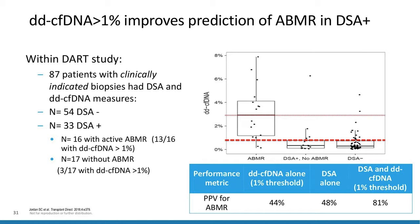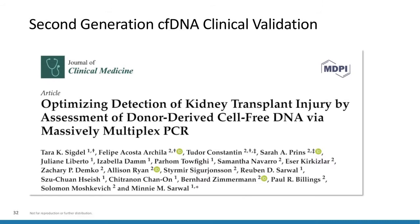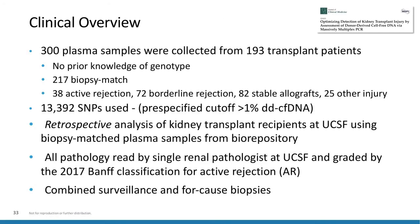Another study looked at a second-generation donor-derived cell-free DNA test done as part of a biobank — 193 transplant patients who had all undergone biopsies and had matched plasma. About half were for-cause biopsies and half surveillance biopsies. This test uses 13,000 SNPs to determine the fraction of donor-derived cell-free DNA — the more SNPs used, the more accurate the fraction. They used a predefined cutoff of 1%, and it was a retrospective study with all specimens read by a single pathologist at UCSF and graded according to the 2017 BANFF criteria.